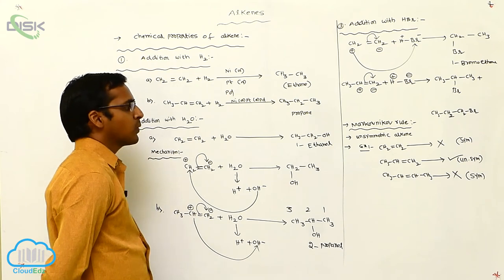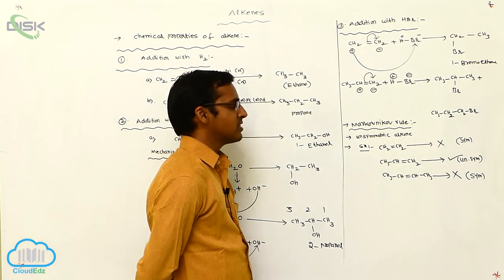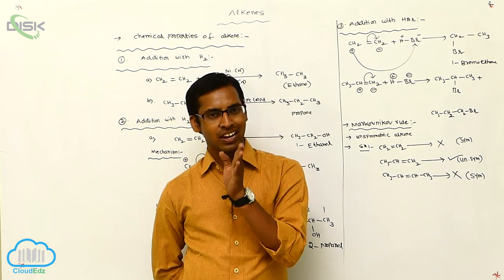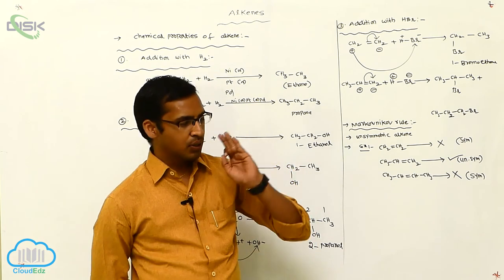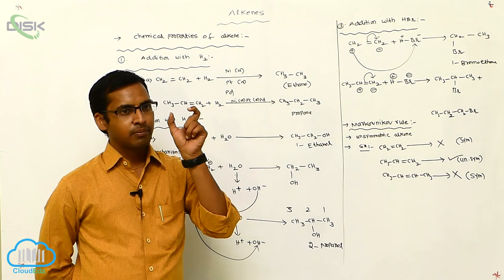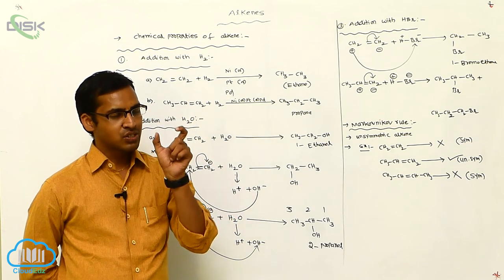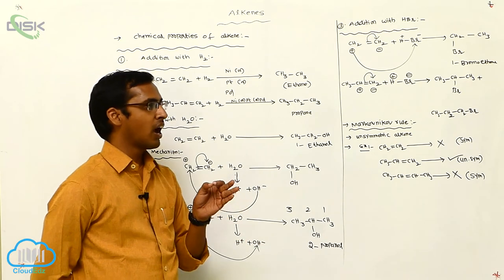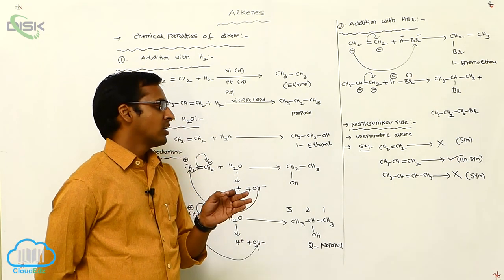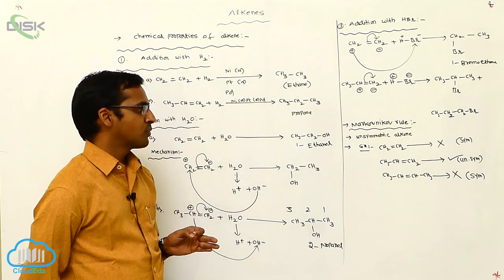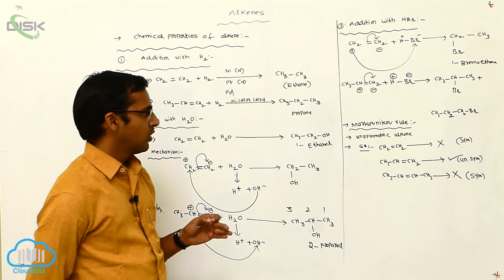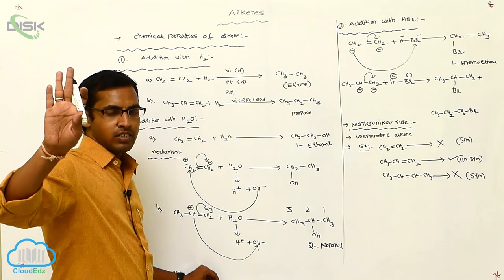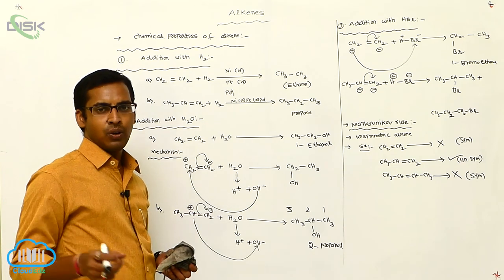Markovnikov's rule means: the negative charged particle is attached to the carbon with a less number of hydrogen atoms. The negatively charged atom or ion attaches to the carbon bearing fewer hydrogen atoms — this is Markovnikov's rule. This rule is explained by the following mechanism.